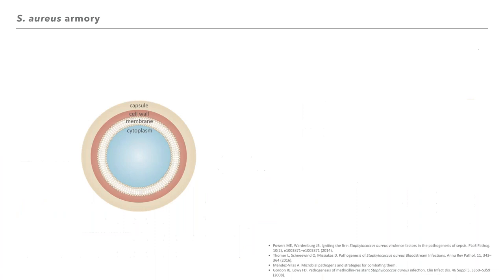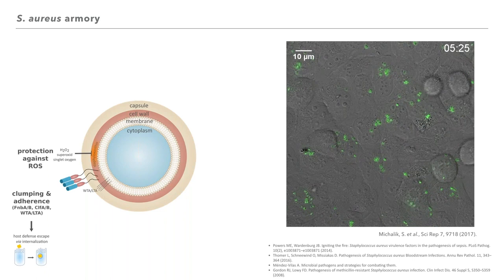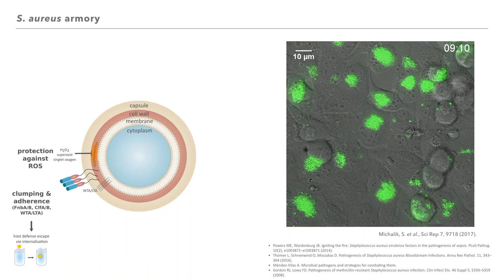S. aureus is a very potent pathogen and has several weapons. Its pigmentation protects it against reactive oxygen species. Adherence factors allow host defense escape via internalization, which is also depicted in the live cell imaging movie shown on the right side of the slide.